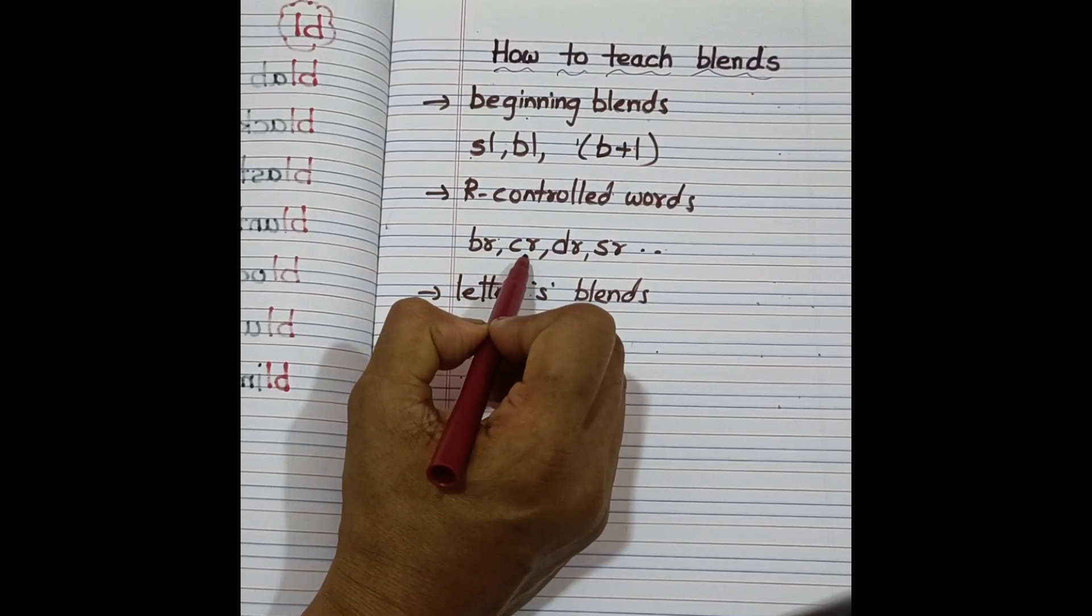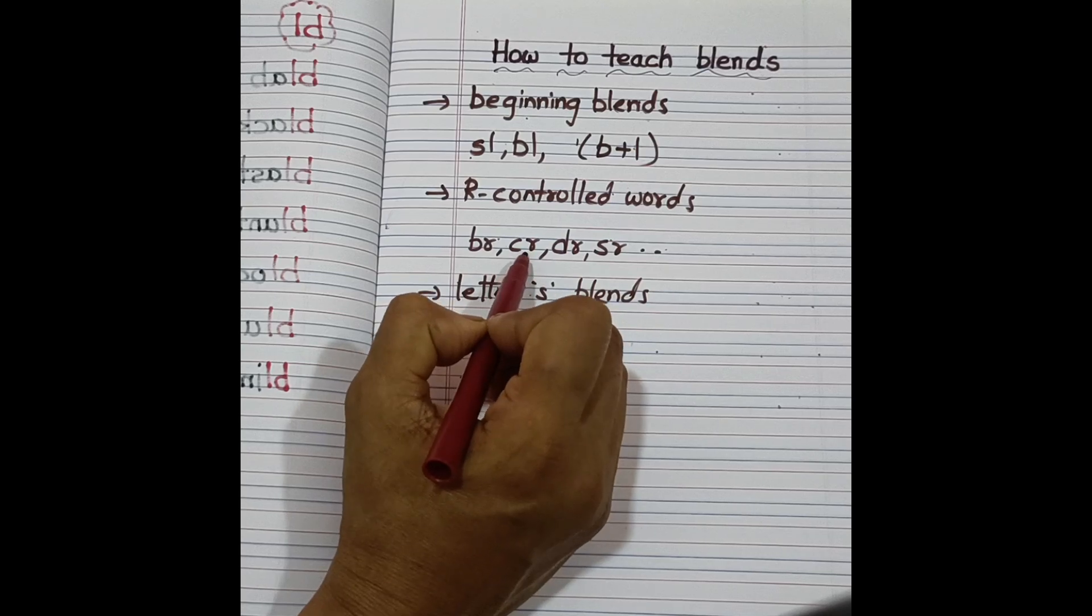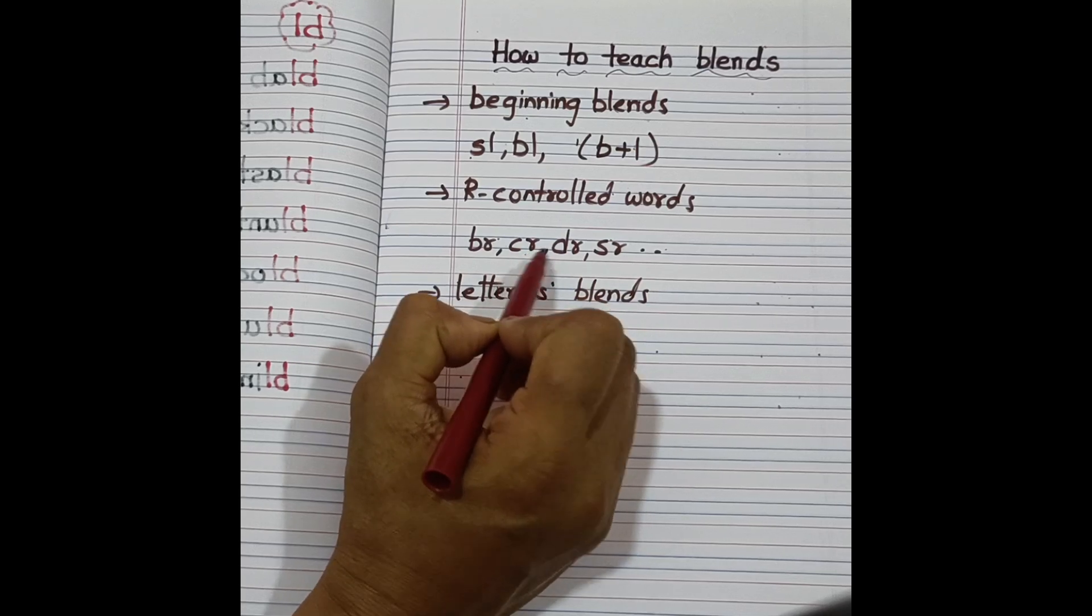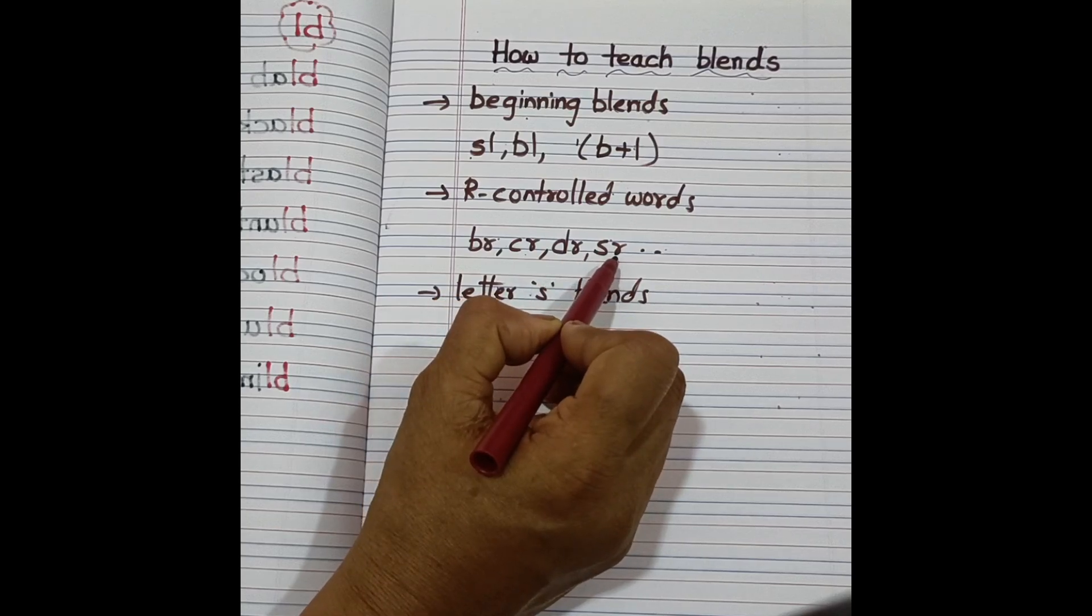Cr, cr, cr, ack, crack. Cr, isp, crisp. And dr, dr, um, drum. Sr, sr.